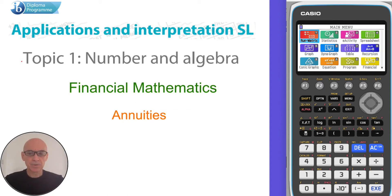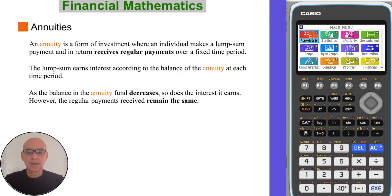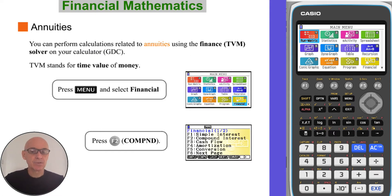In this video I'm going to talk about financial mathematics, specifically about annuities as shown in the syllabus. An annuity is a form of investment where an individual makes a lump sum payment and in return receives regular payments over a fixed time period. The lump sum earns interest according to the balance of the annuity at each time period, and as the balance decreases so does the interest it earns. However, the regular payments received remain the same. You can perform calculations related to annuities using the finance solver application on your calculator.